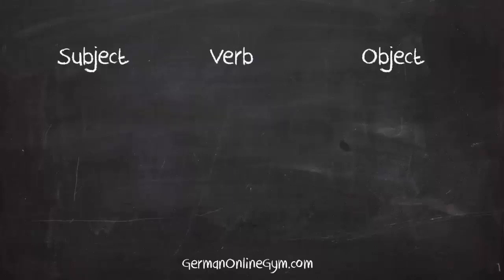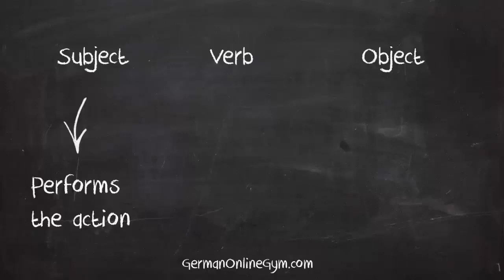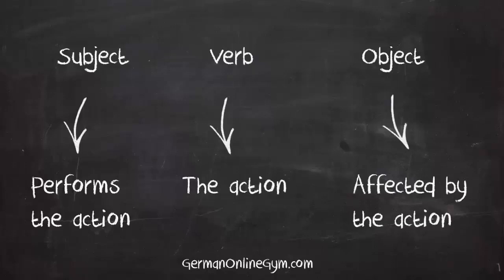The word order in a typical German sentence is subject, verb, object. The subject performs the action, the verb is the action, and the object is affected by the action.